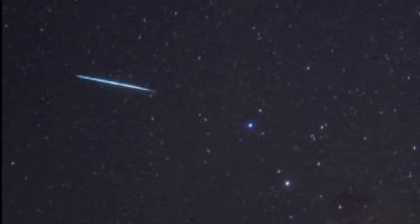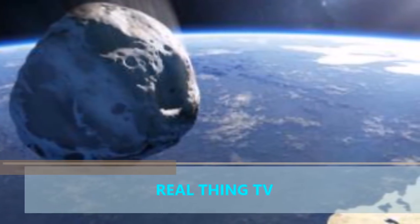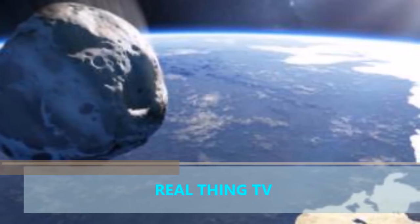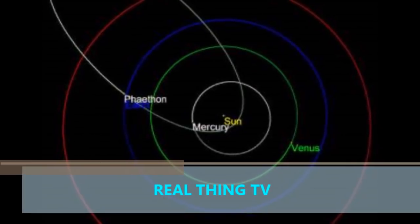The space rock has been named after the son of the Greek sun god Helios who pulled the sun across the sky. According to Greek legend, Phaethon attempted this but lost control of the sun and almost destroyed Earth.